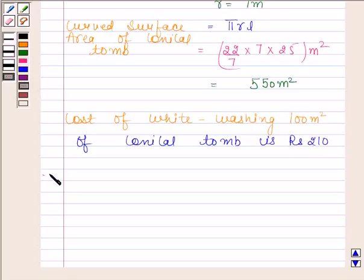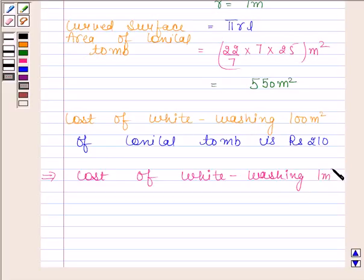Now this implies cost of whitewashing 1 square meter of conical tube is Rs. 210 divided by 100.